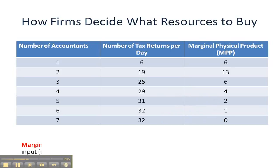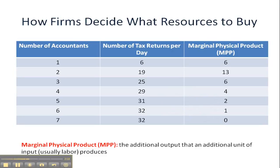When we're figuring out MPP — marginal physical product — that being the additional output that additional units of input, usually labor, produce, we see that diminishing returns sets in at the third worker. The reason for that is that you have variable units of input — in this case accountants — using fixed units of input, which would be the capital in our accounting firm: computers, desks, chairs, and so forth. After a certain point their productivity falls, which happens with the hiring of the third worker.